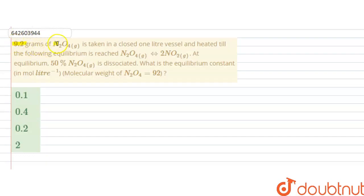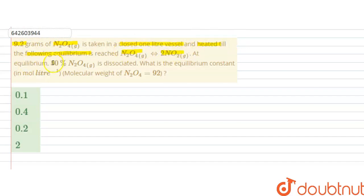Hello students. The question is: 9.2 grams of N₂O₄ is taken in a closed one-liter vessel and heated till the following equilibrium is reached — N₂O₄ forms 2NO₂. At equilibrium, 50 percent of N₂O₄ is dissociated. What is the equilibrium constant in mole per liter? The molecular weight of N₂O₄ is given as 92.